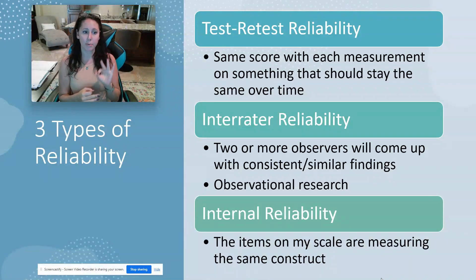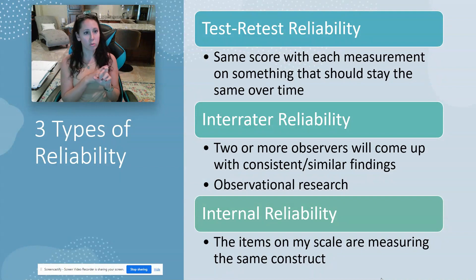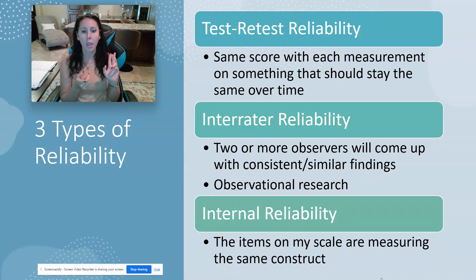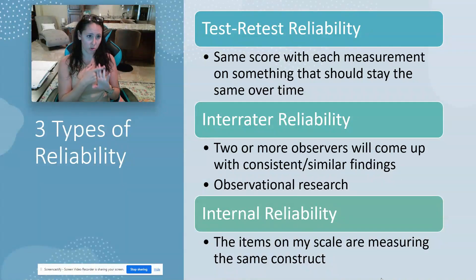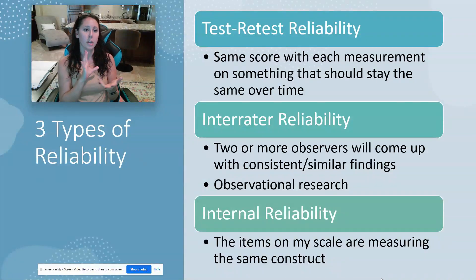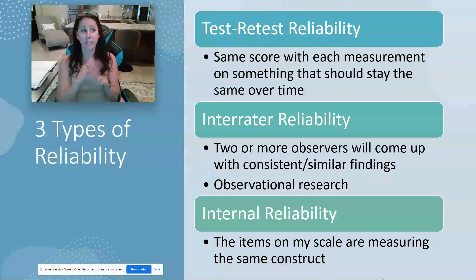So those are the three main types of reliability we talk about in research methods. Test-retest reliability, which is important for self-report measures and also some physiological measures. Inter-rater reliability, which is important for observational research and can also be relevant for physiological measures. And internal reliability, which we normally discuss in the context of self-report measures and larger questionnaires. That's reliability — and now we're going to move on to validity.